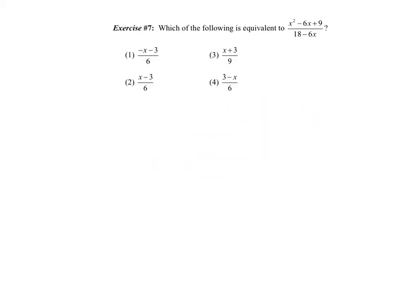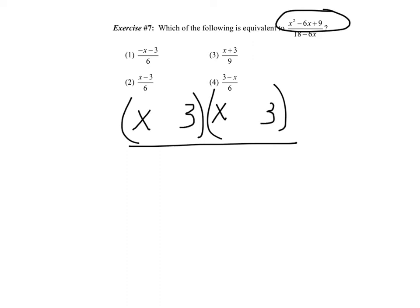Exercise 7. Which of the following was equivalent to this? Alright, so again, it's all back to factoring. On top, I have some nice multiplying and adding 9 to do. X and x. Let's see. 9, I'm going to go with 3 and 3. And to get a positive 9, they either both have to be positive or both negative, and I'm going to go with negative negative. On the bottom, hopefully you notice a GCF of 6, and I get 3 minus x.